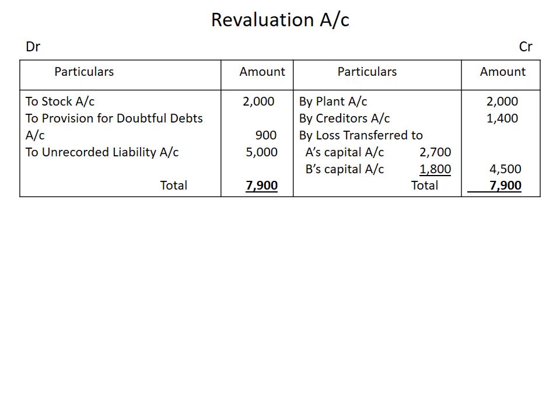That's it for revaluation. Looking at the totals of both debit and credit sides, the debit side total is more than the credit side by Rs. 4,500. Since the debit side of the revaluation account is more, it is a loss. This loss of Rs. 4,500 will be transferred to the old partners in their profit sharing ratio of 3:2, so A will bear Rs. 2,700 and B will bear Rs. 1,800.